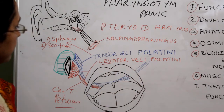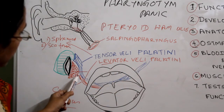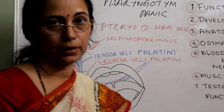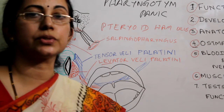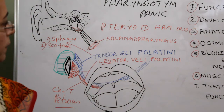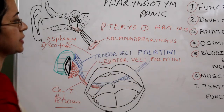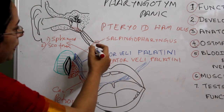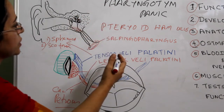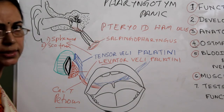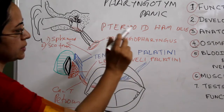The levator veli palatini has two origins: the lower surface of the cartilaginous part of the Eustachian tube, and the lower surface of the petrous bone. It initially runs alongside the Eustachian tube, then crosses to the medial side and merges with the soft palate. The salpingopharyngeus is a weaker muscle around the pharyngeal opening of the Eustachian tube, merging with the palatopharyngeus. Salpingopharyngeus and levator veli palatini are supplied by the pharyngeal plexus through the cranial accessory via the vagus nerve, while tensor palatini is supplied by the mandibular nerve.